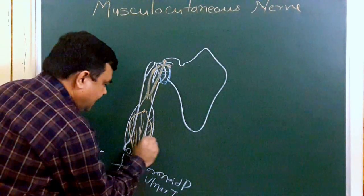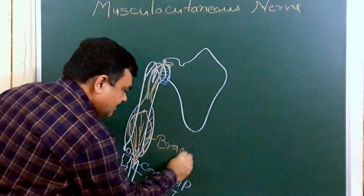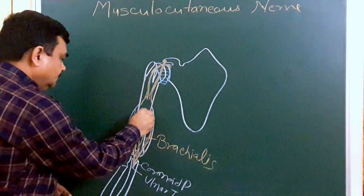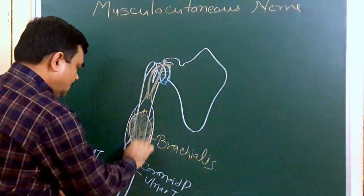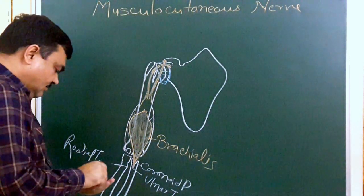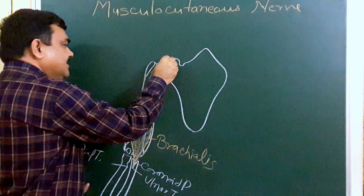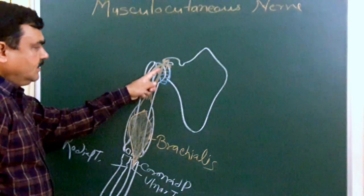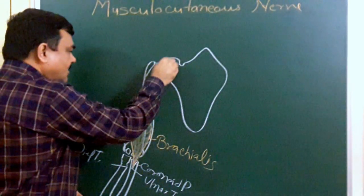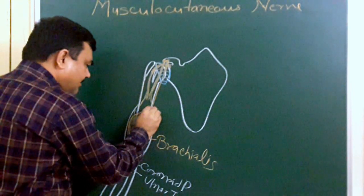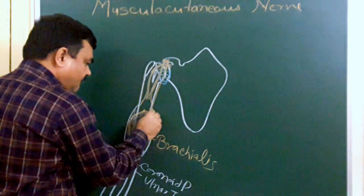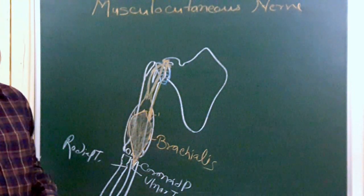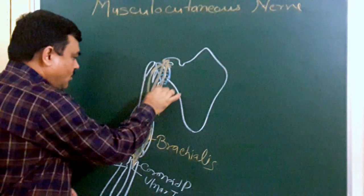This muscle is brachialis. And here is another muscle — this is coracobrachialis. It takes origin from the tip of the coracoid process along with the short head of biceps brachii, and is inserted on the medial side of about the middle of the shaft of the humerus.